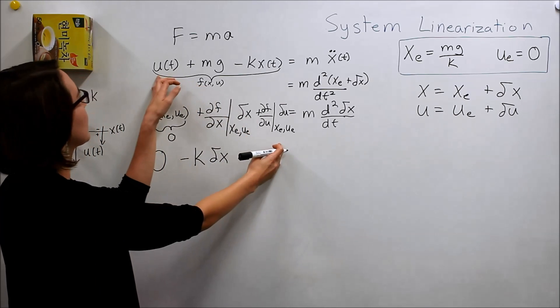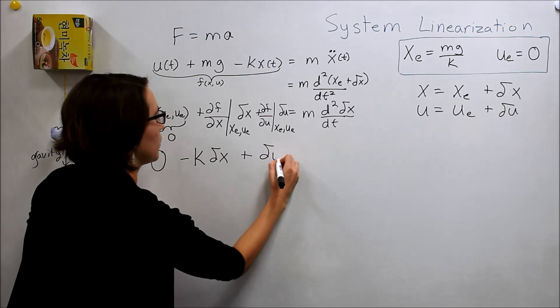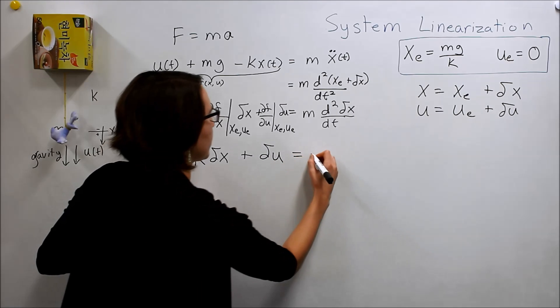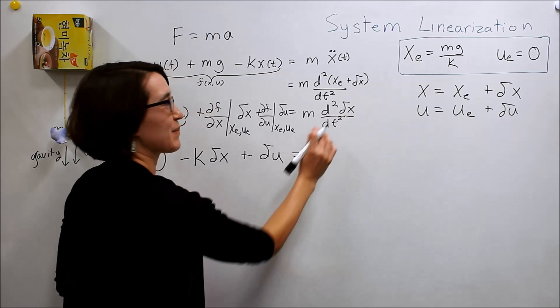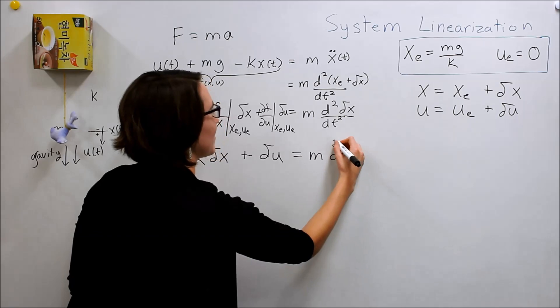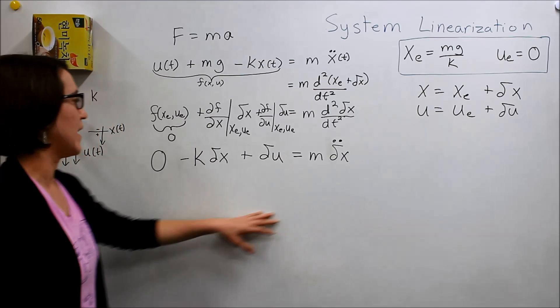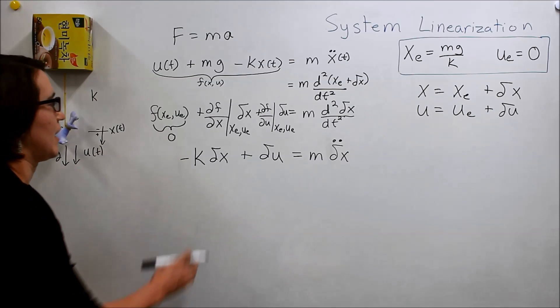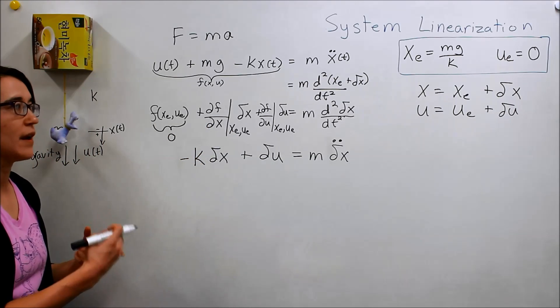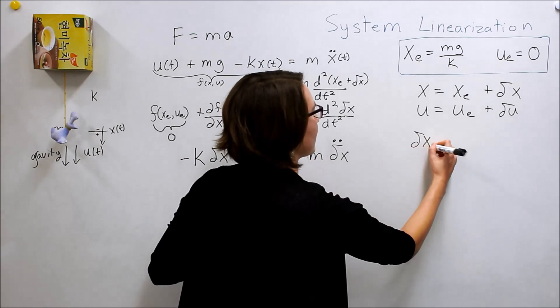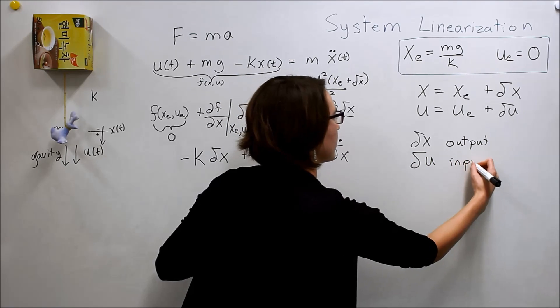And then we do the same thing, but this time with u. So, these don't have any u's in it. So, just this u's coefficient would be 1. So, it'll just be delta u. And then, that equals m delta x double dot. So, we're going to do delta x double dot above the whole thing. So, this would be our new expression. And now, you can see that this is all the terms are in terms of delta x or delta u. Which is now become our input and our output. So, now, delta x is our output. And delta u is our input.